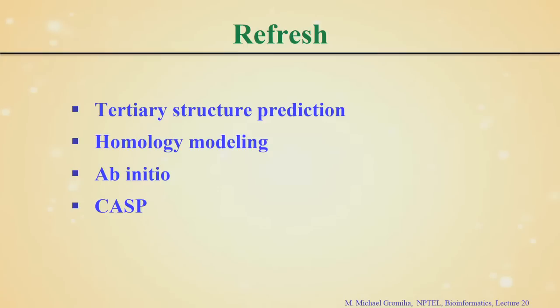In the previous class, we discussed about predicting the 3D structure of your protein from its amino acid sequence, because amino acid sequence contains information regarding the 3D structure. You can utilize that information to predict the 3D structures. We discussed about various methods, and one of the major ones is homology modeling.